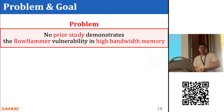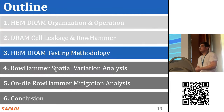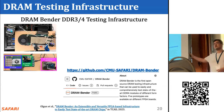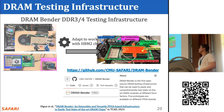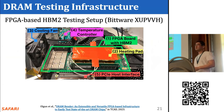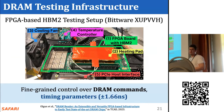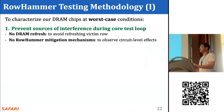No prior work rigorously studies the rowhammer vulnerability in high bandwidth memory chips, and our goal is to experimentally analyze how vulnerable these chips are. Our testing infrastructure is based on the DRAM Bender DDR4 testing infrastructure, which we adapted for HBM2 chips. Our setup uses the Bitware XUPVVH HBM2 FPGA board, with an Arduino temperature controller managing a heating pad and cooling fan to keep temperature stable.